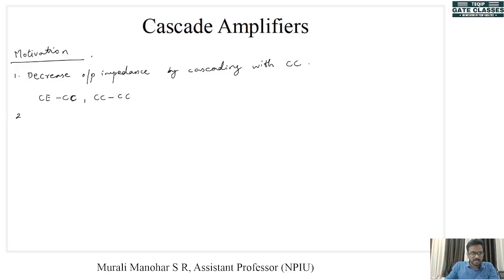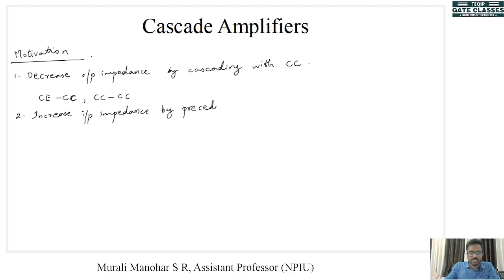The second need for cascading is to increase the input impedance. For this, the input stage will be a CC amplifier — a common collector amplifier. By preceding with CC, it can be CC-CE, CC-CC, or a Darlington pair.